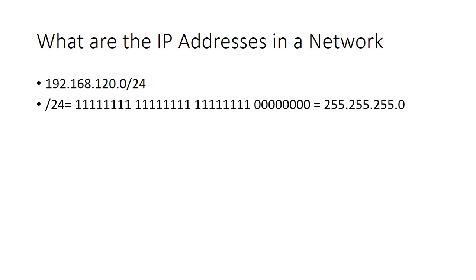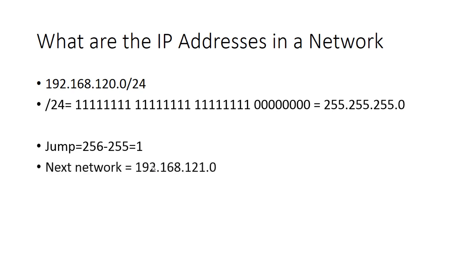Now the next step is to calculate the jump, which is the result of subtracting the last nonzero subnet mask value from 256. In this case, 255 is the last rightmost nonzero subnet mask value, so 256 minus 255 equals 1. This jump gives you the network address after the given network.